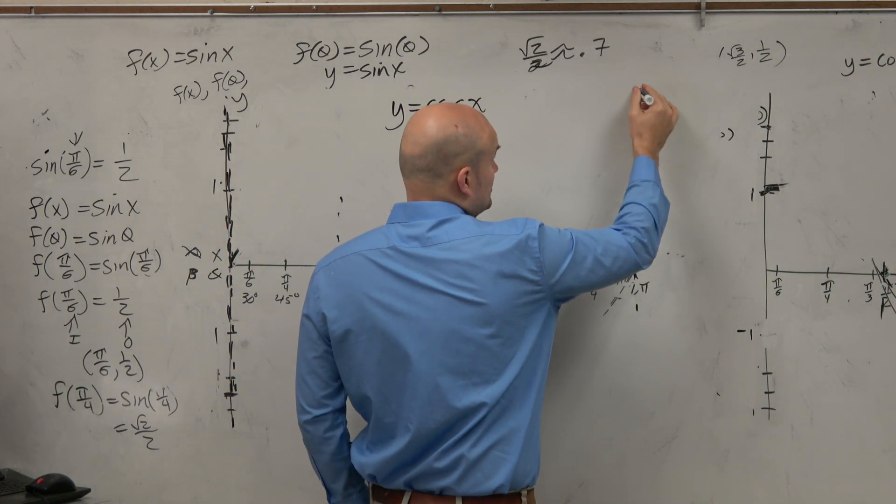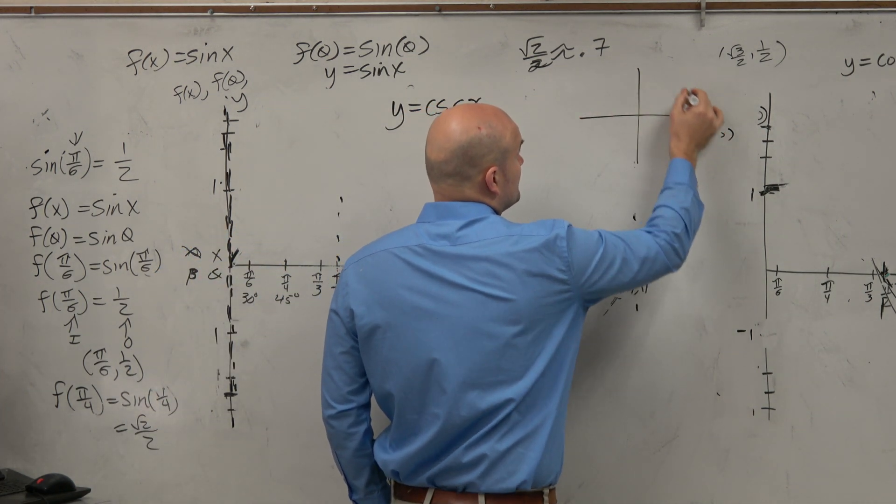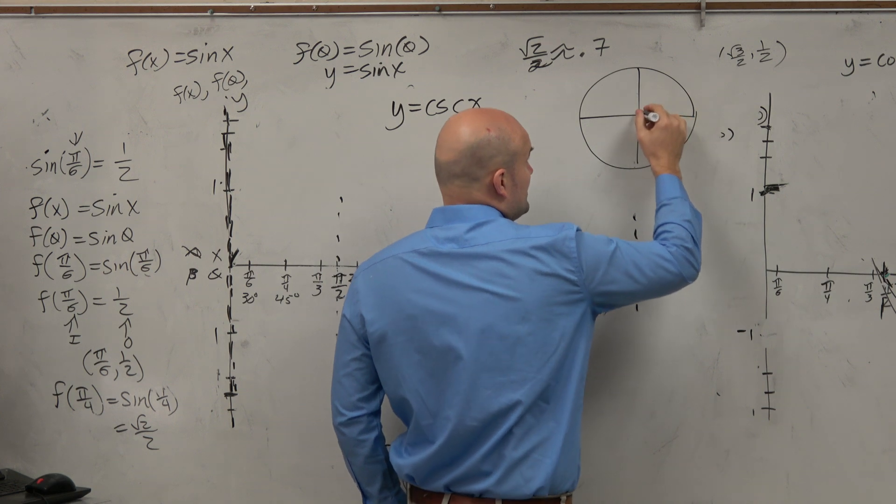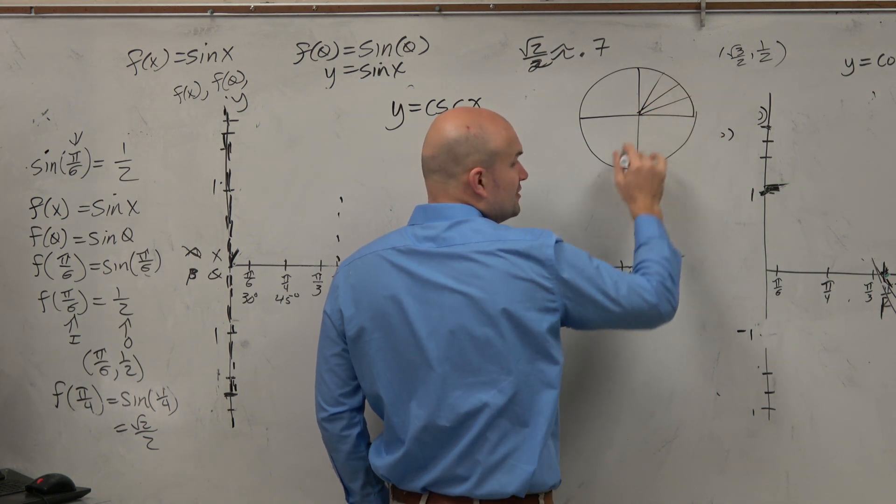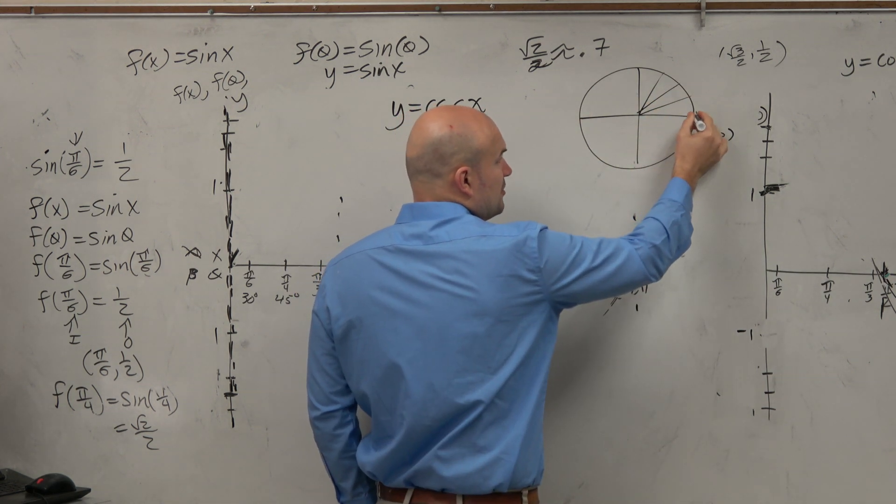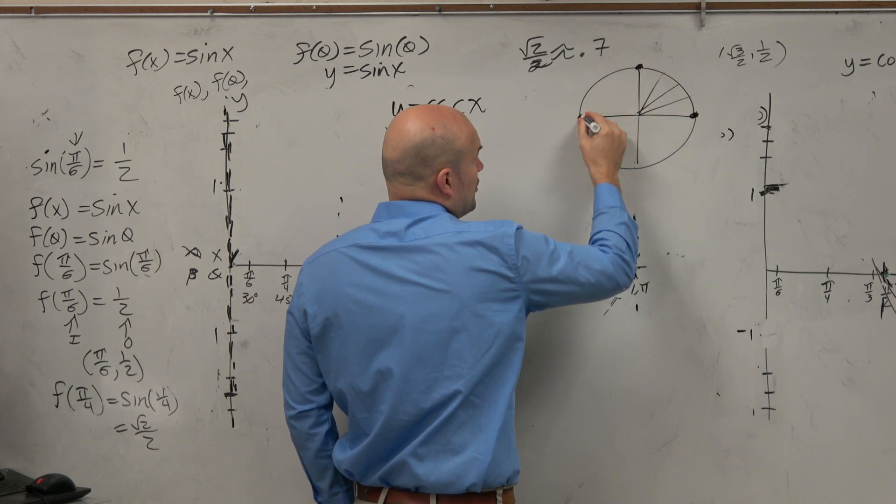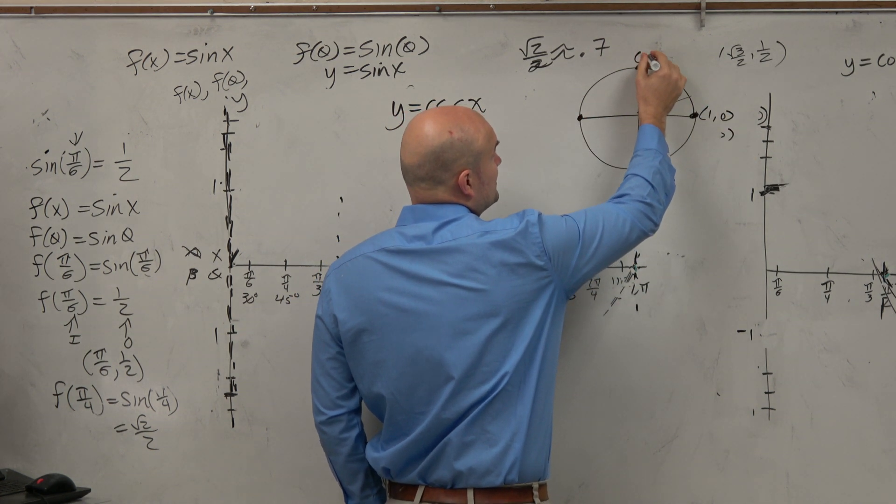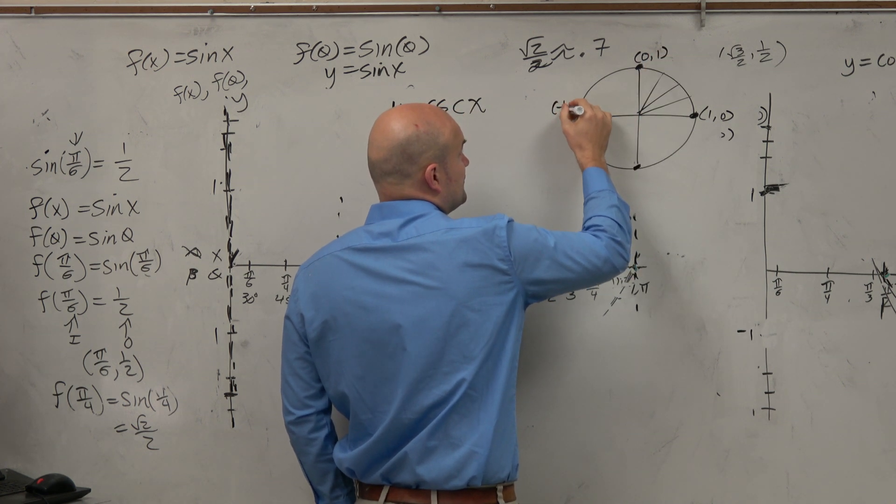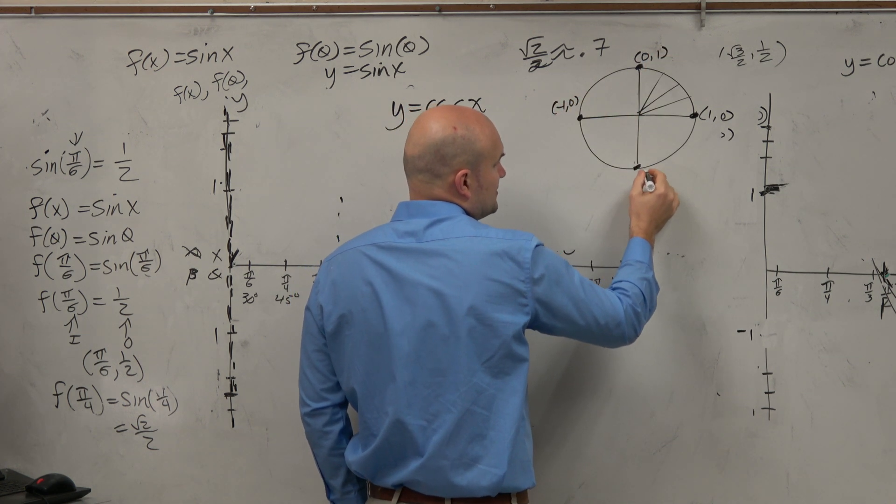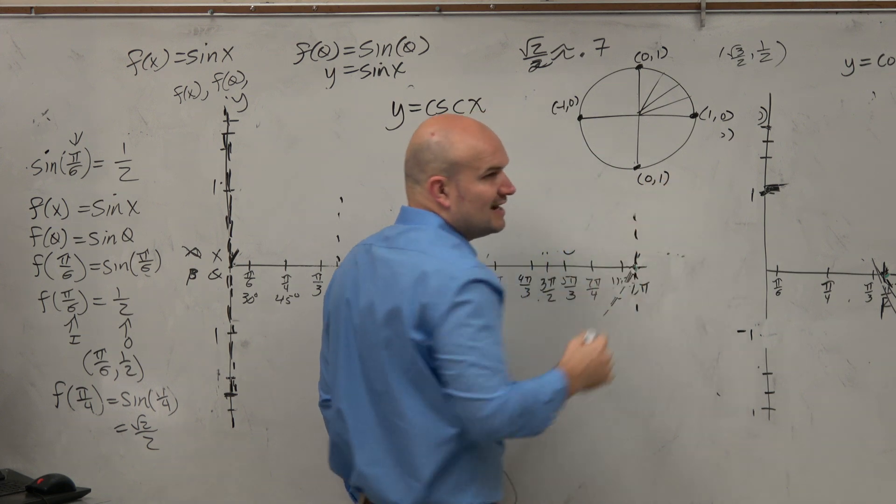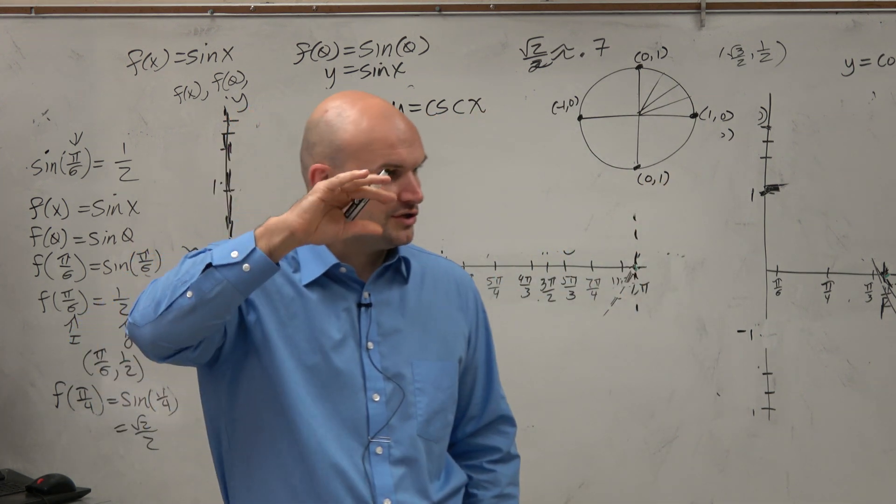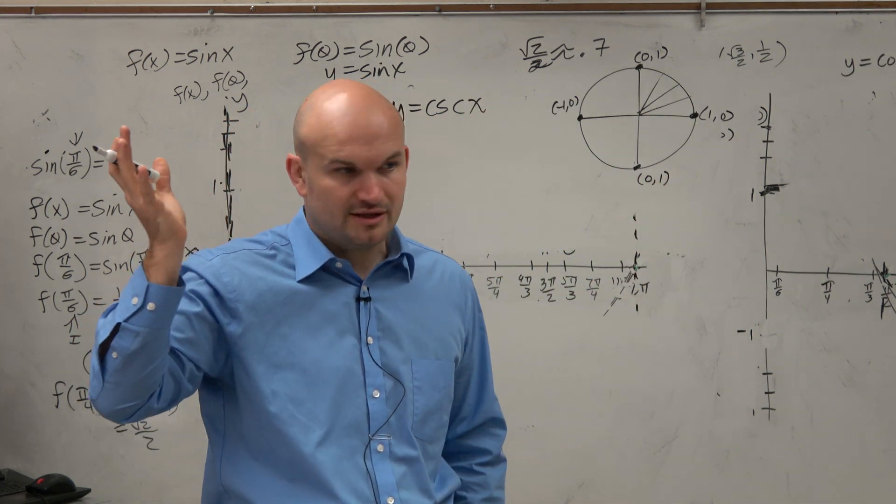We used the unit circle last class period to graph the sine function, primarily focused on the first quadrant and then found all those points. But most importantly for today's lesson is knowing these coordinate points. If we have a unit circle, those x and y intercepts are going to be at those points.